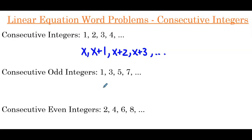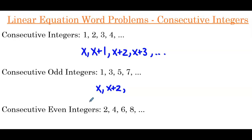So again, let's start by defining our first odd integer with the variable x. To find the next odd integer, we would have x plus 2. That's because to get from 1 to 3 we had to add 2, and from 3 to 5 we had to add 2. So if x is our first odd integer, to get to the next odd integer we have to add 2 to it. And following that pattern we'd have x plus 4, x plus 6, and so on.